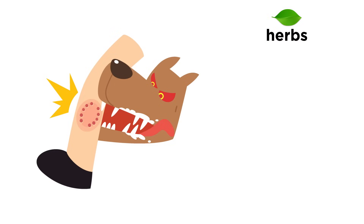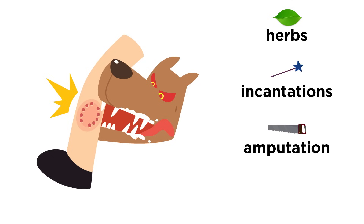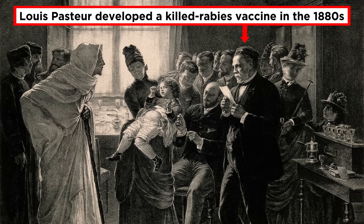Some remedies involved herbs or incantations, while others involved amputation or burning the bite wound with religious relics. It wasn't until Louis Pasteur developed the killed rabies vaccine in the 1880s that a bite from a so-called mad dog didn't mean certain death.